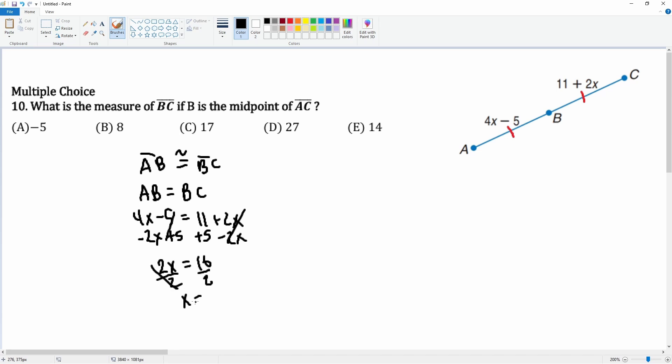X equals 8 is not what the question is asking for. It's asking for what AC is. AC is going to be equal to 4x minus 5 plus 11 plus 2x, the entire thing AC.